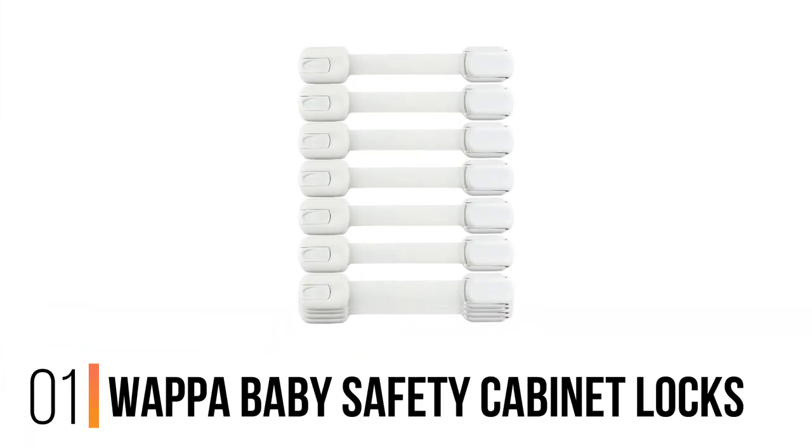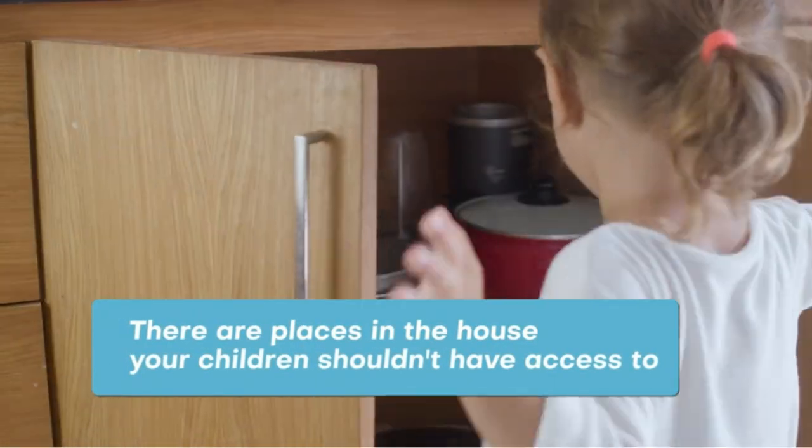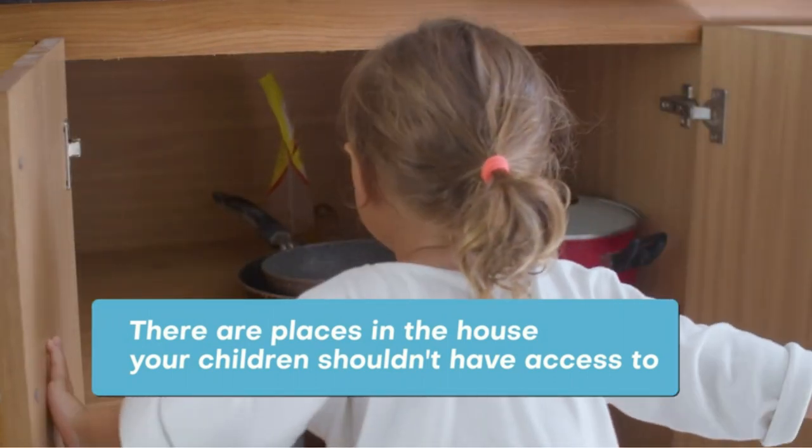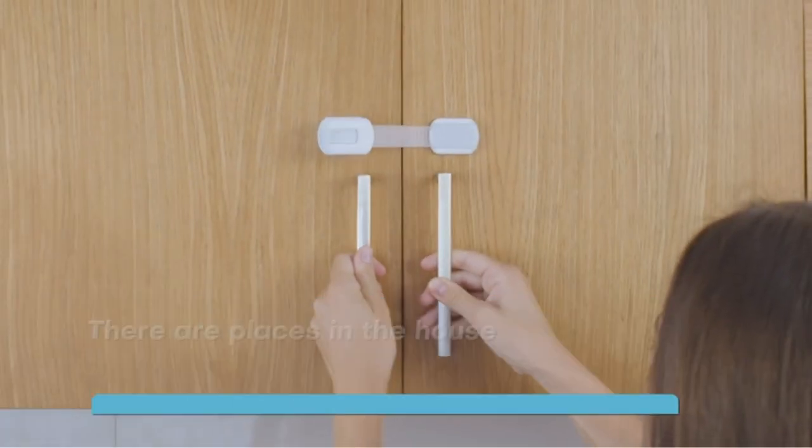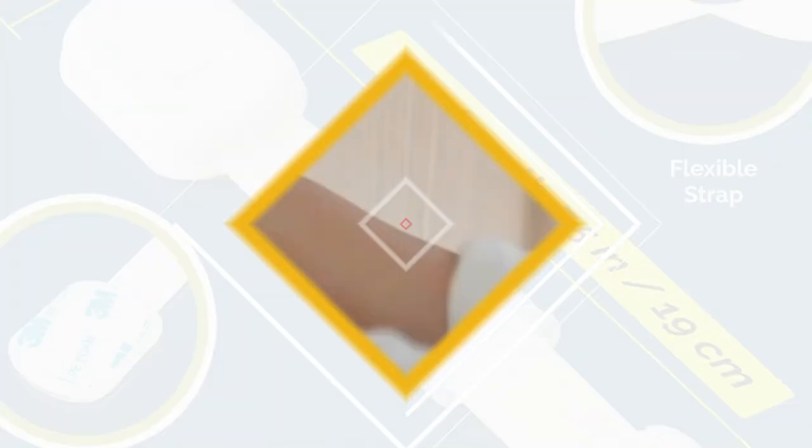Number one: WAPA Baby Safety Cabinet Locks. The WAPA Baby Safety Cabinet Locks top our list because they're affordable, discreet, and easy to install. Plus, they work for babies and toddlers. They even come in different colors so you can baby-proof with style.